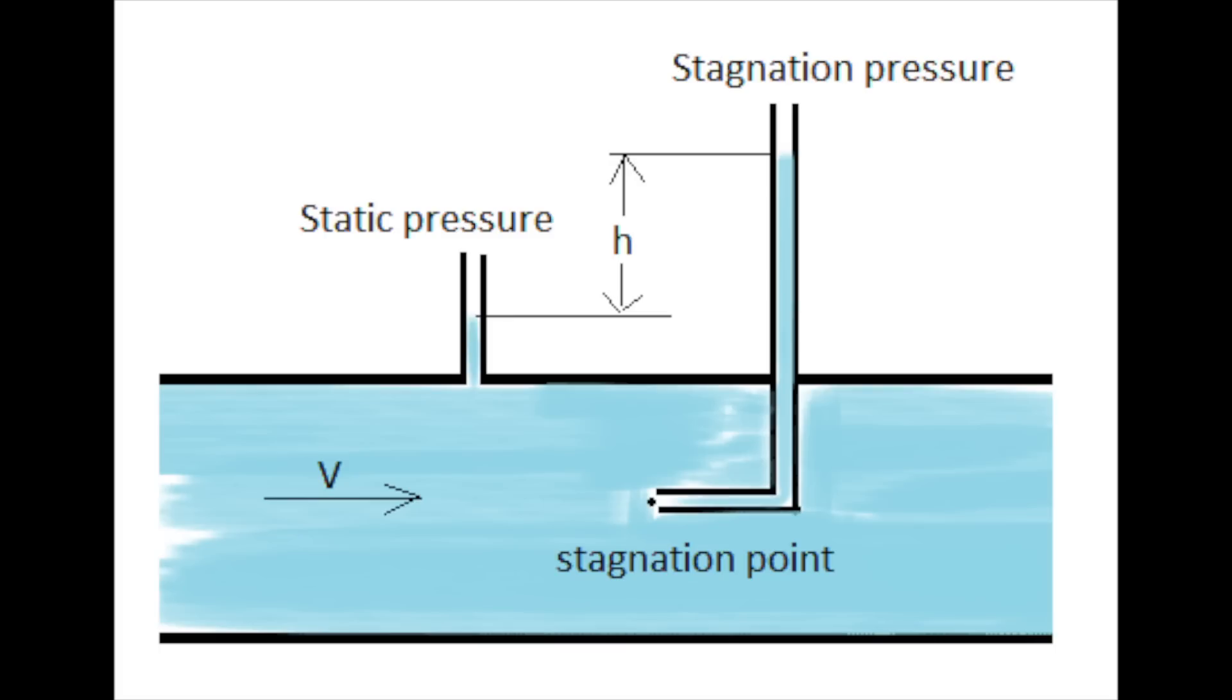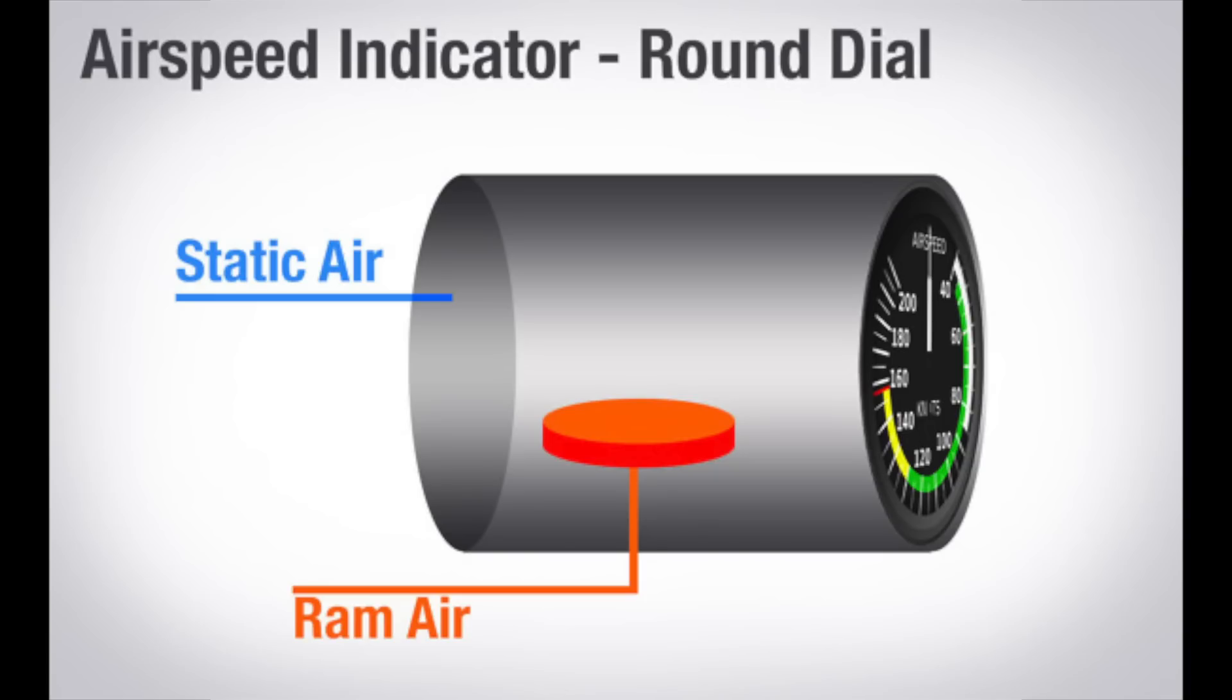Pitot pressure is larger than the static pressure, because it includes the effect of the airstream ramming into the tube. It is the pressure felt at the nose of the plane or seen by the leading edge of the wing. By taking the difference between the pitot pressure and the static pressure, you can tell how fast you fly.